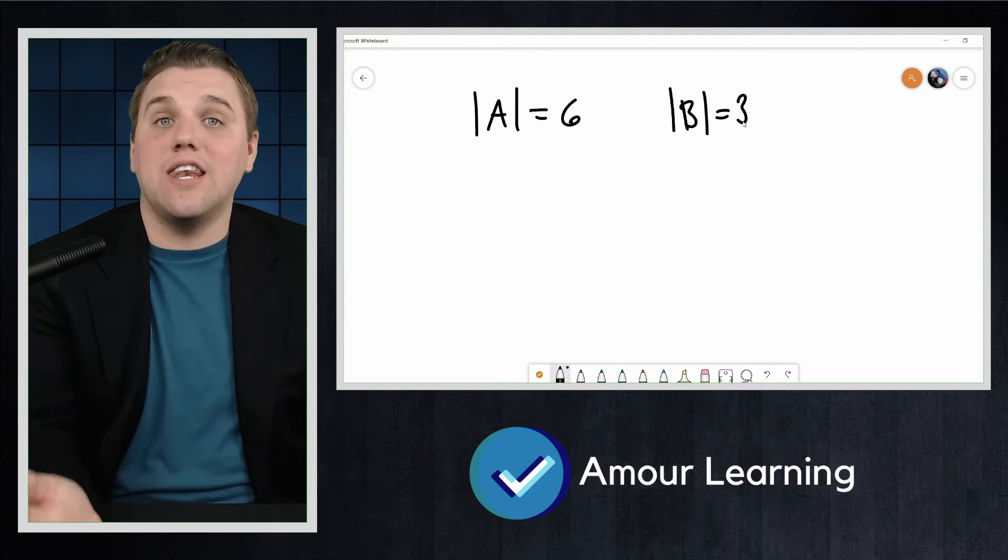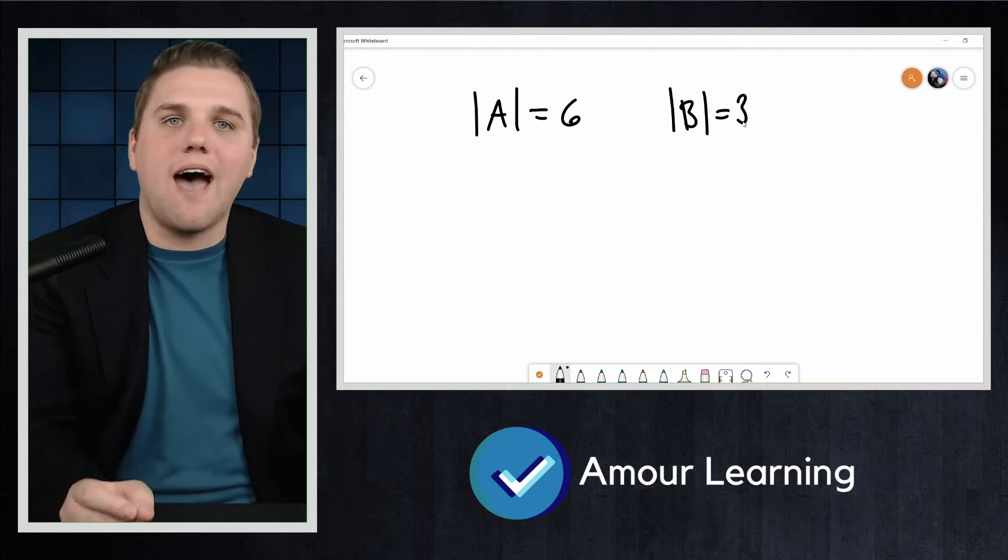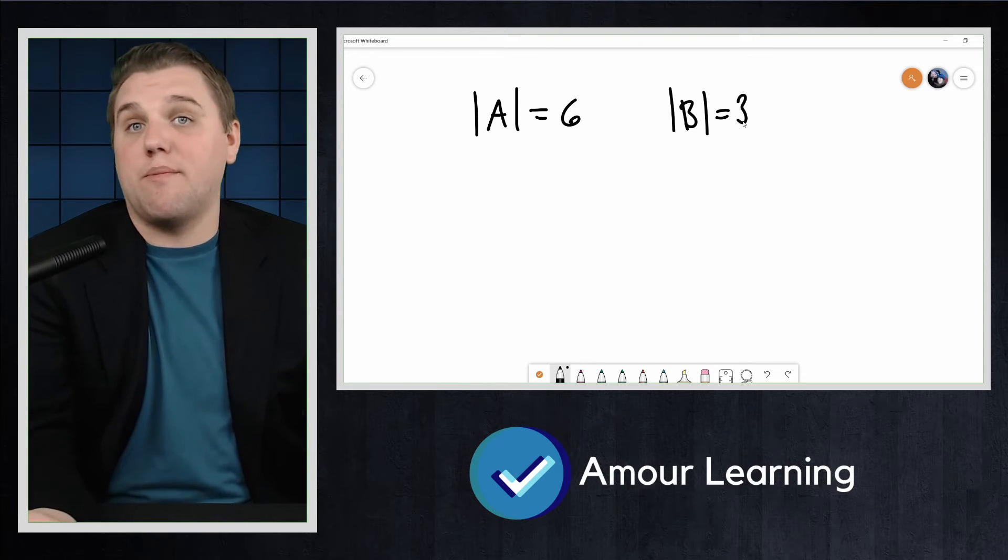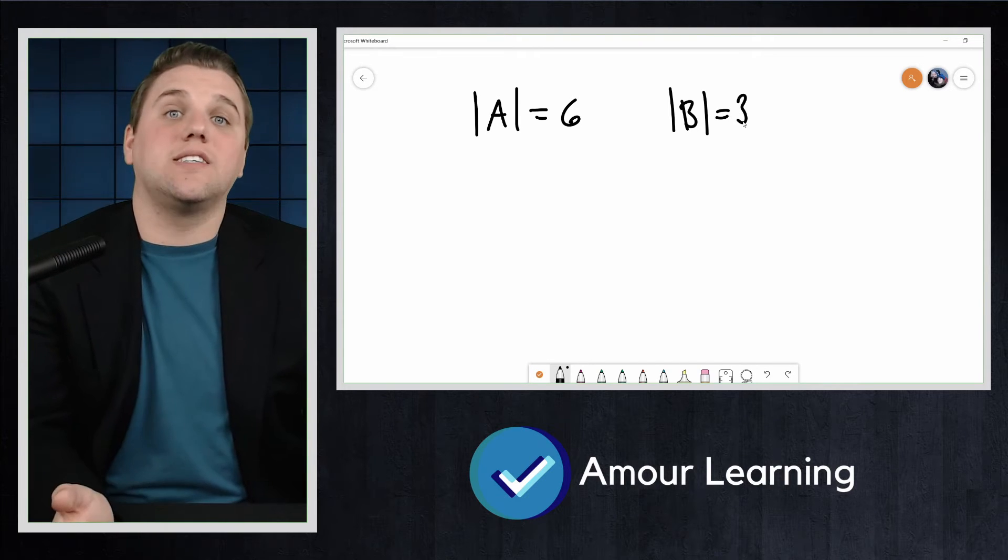For sets that have a finite number of elements, the cardinality of the set is simply the number of elements in the set.